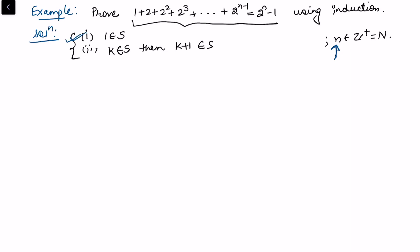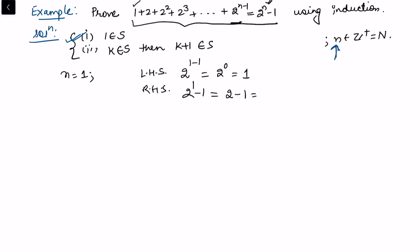To prove this, we first verify the result for n equals 1. On the left hand side, the last term is 2 to the power n minus one, so for n equals 1 this is 2 to the power zero, which equals 1. On the right hand side, 2 to the power n minus one gives 2 to the power 1 minus 1, which is also 1. Both sides are equal, so the result is true for n equals 1.